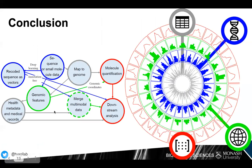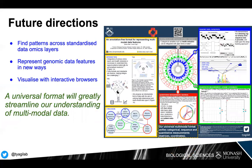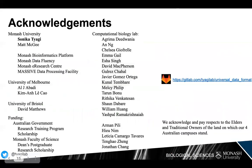We attempt to unify these genomic data formats by representing most data types as a function of the genome — at the gene level, at the coordinate level, or the raw sequence level. This has the advantage of being annotation-free, making it theoretically effective on non-model organisms, and it fits into existing pipelines. With this proposed format, we will be able to find patterns across standardized omics data layers, represent genomic data features in new ways, and visualize them with interactive browsers. Thank you for your time.